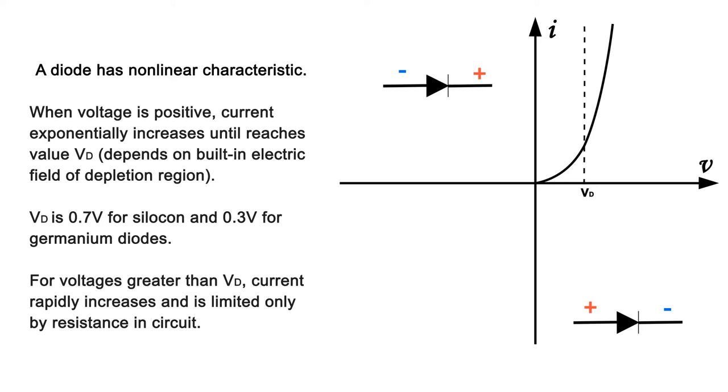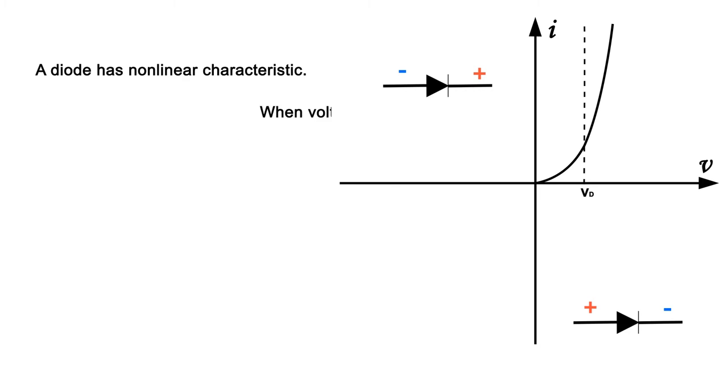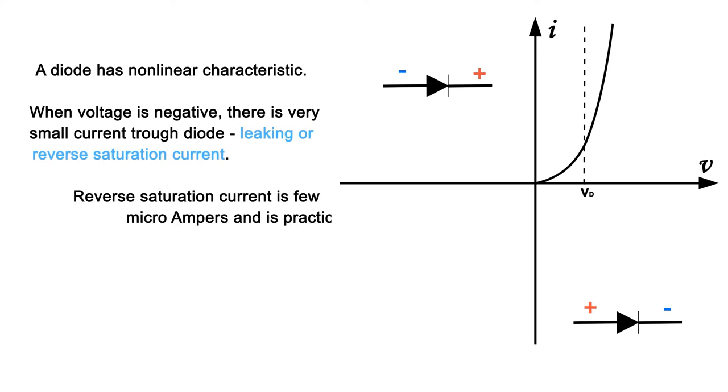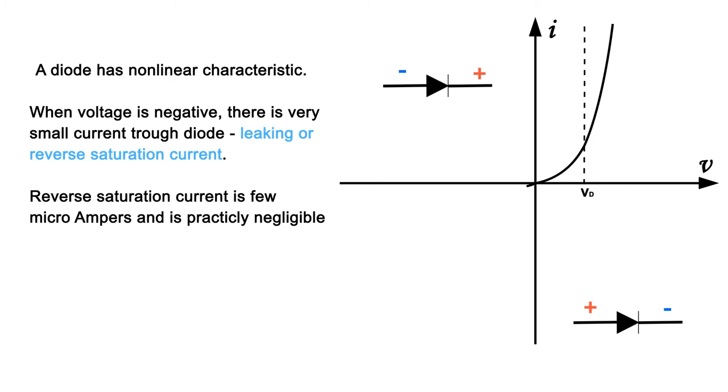When voltage is negative there is very small current through diode, leaking or reverse saturation current. Reverse saturation current is few microamperes and is practically negligible.